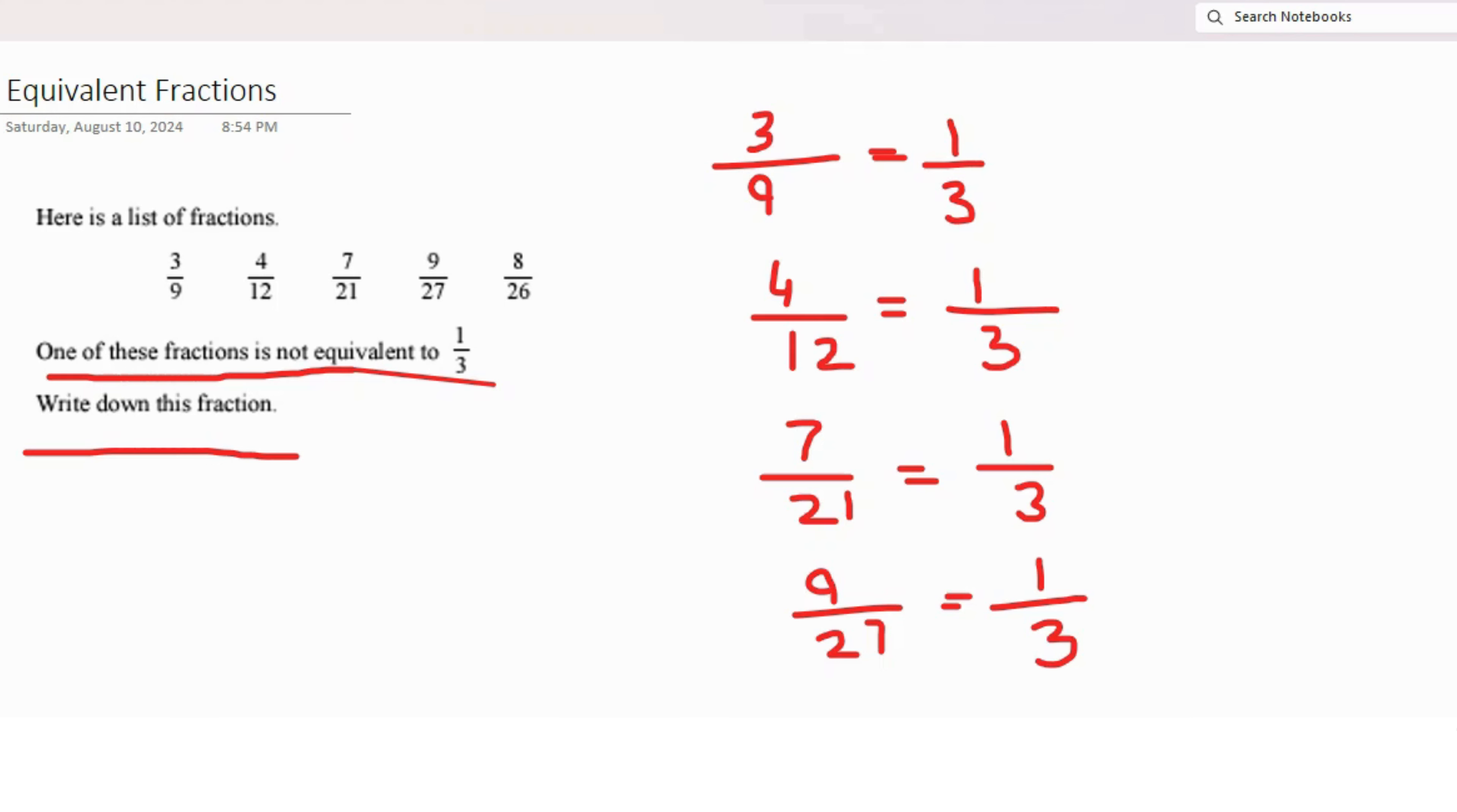This leaves us with just one option, which is 8 out of 26. We can still reduce it, but there's no way you can have a 3 here because it's an even number. So 2 times 4 is 8, and 2 times 13 is 26. It's reduced to 4 out of 13. So the fraction that is not equal to 1 out of 3 is 8 out of 26.